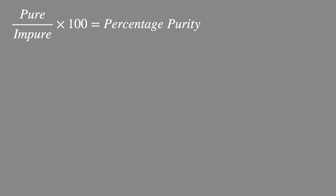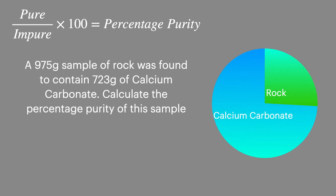It's calculated by simply dividing the mass of the pure substance by the mass of the impure substance, and then multiplying by 100. In this example, we've got 723 grams of pure substance in the 975 gram sample, so we divide the pure by the impure to find that we have a sample which is 74.2% pure. Because it's impossible to calculate the number of moles of the impure sample — since you don't know the chemical formula of the impurities — you always have to do this calculation in grams.